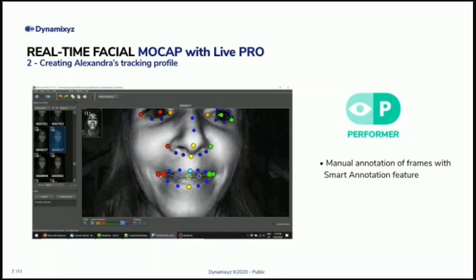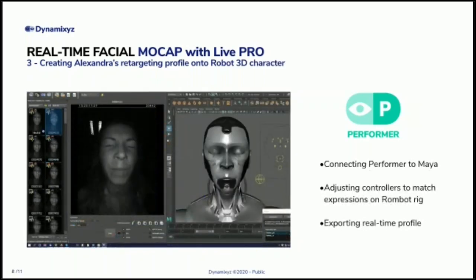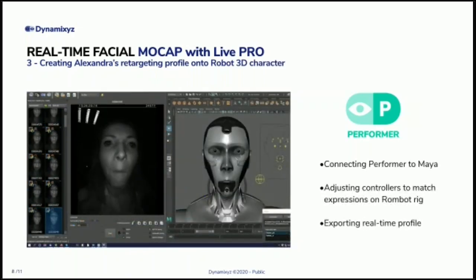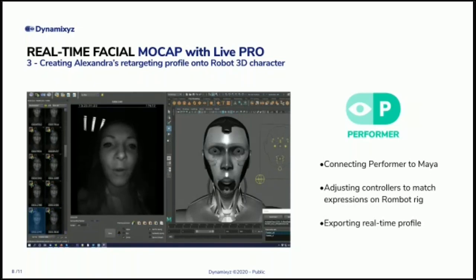The tedious part is annotation: on all those frames, you're requested to place landmarks on the face — where are the eyes, where is the mouth, where is the nose, etc. We're going to release soon a pre-annotation automatic system to help with this. Right now that operation lasts between one and a couple of hours, but you perform it only once for the whole project. Once landmarks are placed, you build the tracking profile and the system can then accurately track the actor's face.